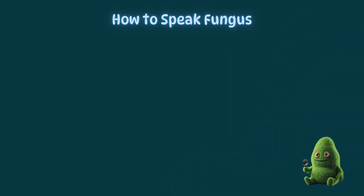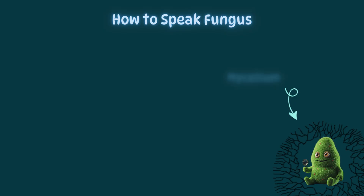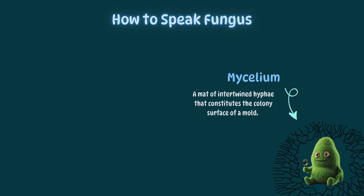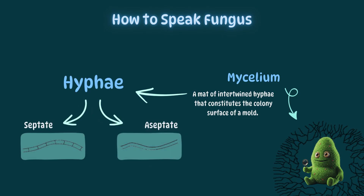Buddy, we need you to stay put. Buddy's strange-looking restraint is called mycelium. This is a mat of intertwined hyphae that constitutes the colony surface of a mold. Many think hyphae look like spaghetti — if hyphae are spaghetti, then mycelium is the spaghetti bowl.